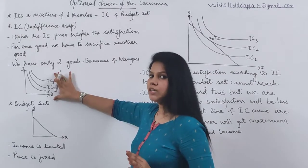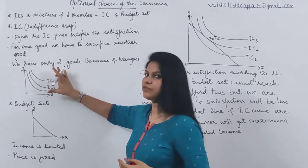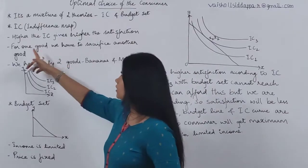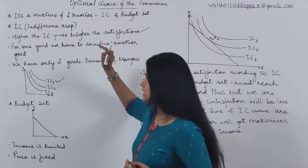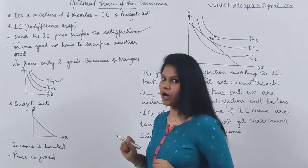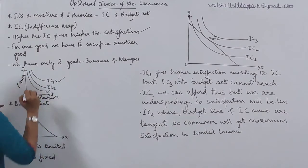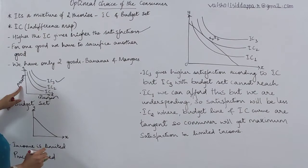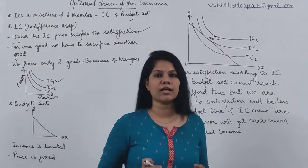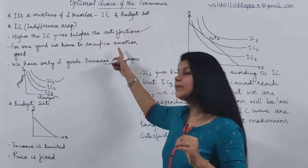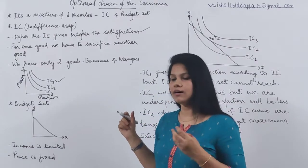This is the indifference curve. When more than one indifference curve is represented in a single diagram, it is called an indifference map. Higher the indifference curve, higher the satisfaction. For one good, we have to sacrifice another. On the x-axis you have banana and on the y-axis you have mango. If you want more banana, you have to sacrifice mango, and vice versa. We have considered only two goods — banana and mango — which is one of the assumptions.